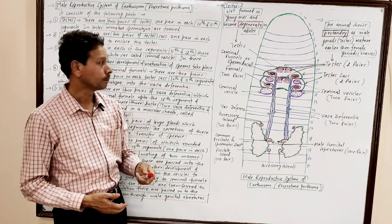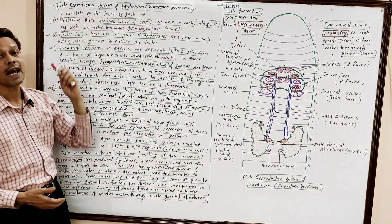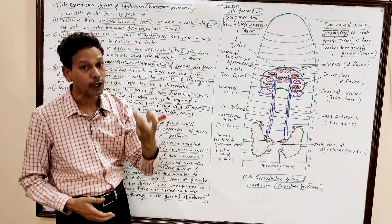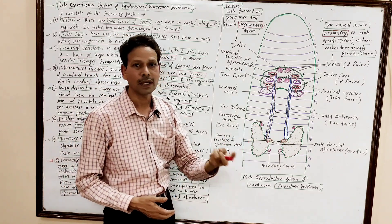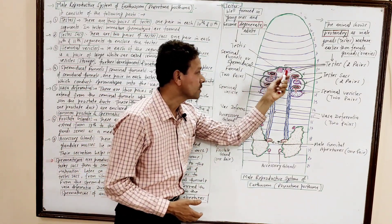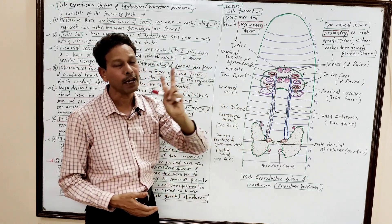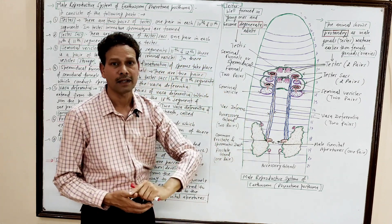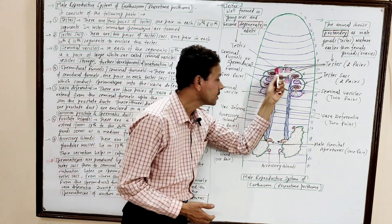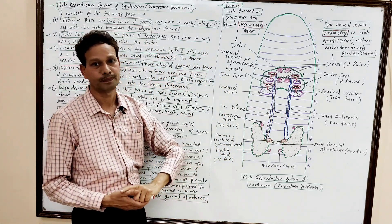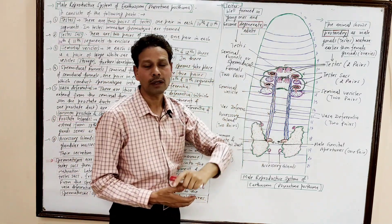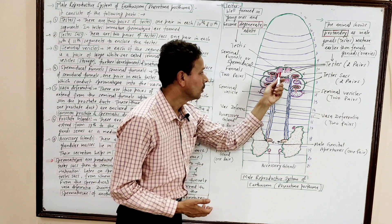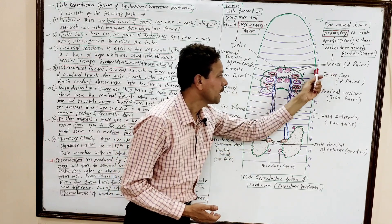The second part of the male reproductive system is the testes sacks. These male gonads are enclosed in chambers called testes sacks. There are two pairs of testes sacks. Immature spermatozoa from the testes are released into the testes sacks.